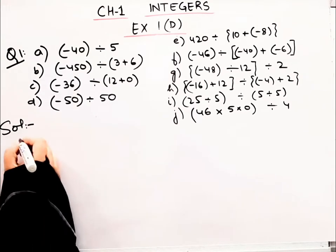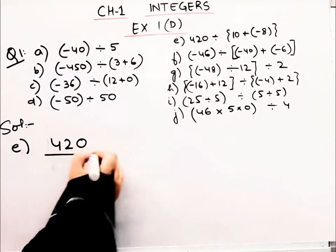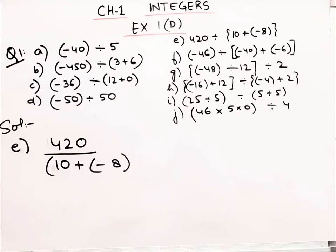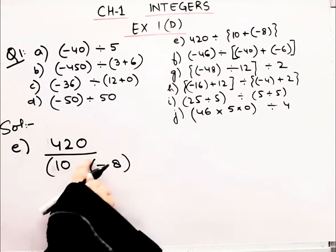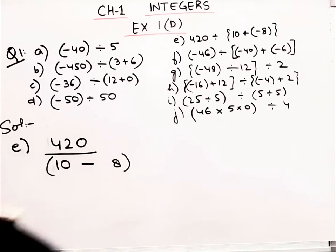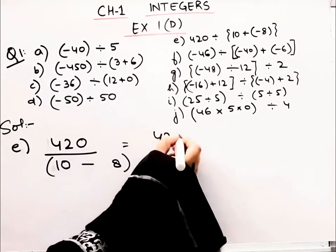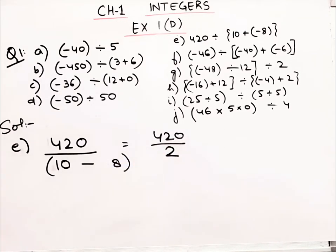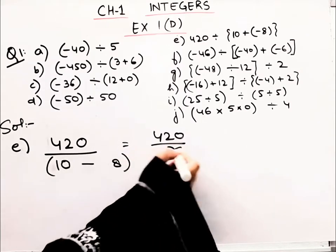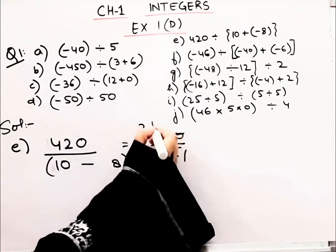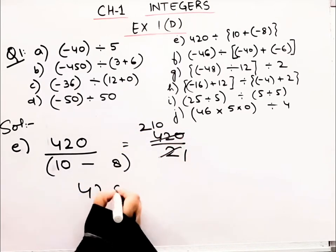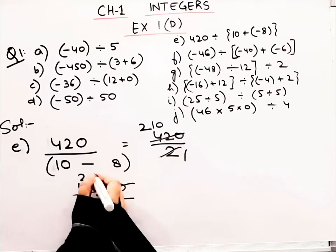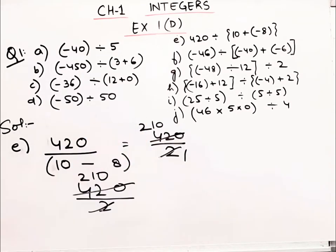Now let's do the part (d). Here we have minus 50 divided by 50. The answer is minus 1. So let's do the next part. Here we have 420 divided by 10 plus minus 8. Plus minus, minus becomes minus. So 420 divided by 10 minus 8.